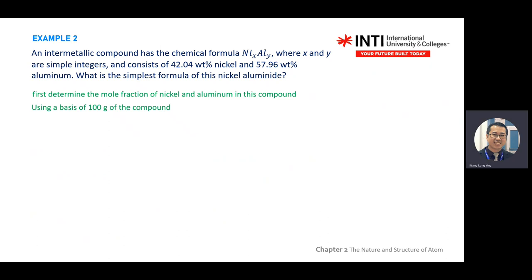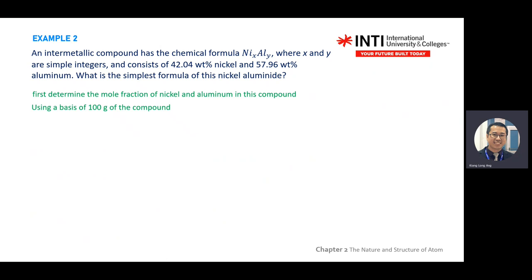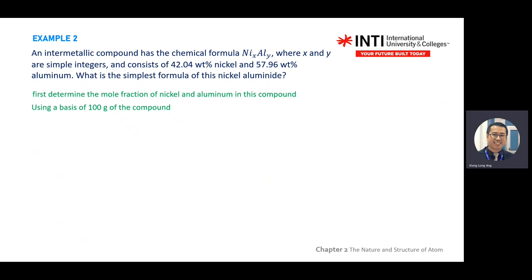We first assume that we have 100 grams. For materials we use grams as the unit, so we use 100 grams. In 100 grams, how many grams of nickel do you have? Based on the percentage: if you have 100 grams of the compound - a mixture of nickel and aluminum - you have 42.04 grams of nickel and 57.96 grams of aluminum.